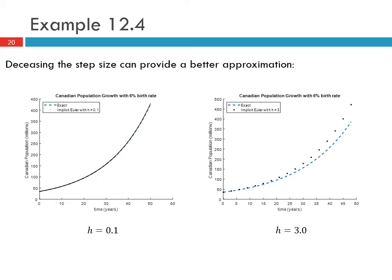Similar to the explicit Euler method, decreasing the step size provides a better approximation. The results with h = 0.1 are very close to the exact solution, while with h = 3 the estimate is worse. In all cases, the error tends to increase as t increases for this particular function.